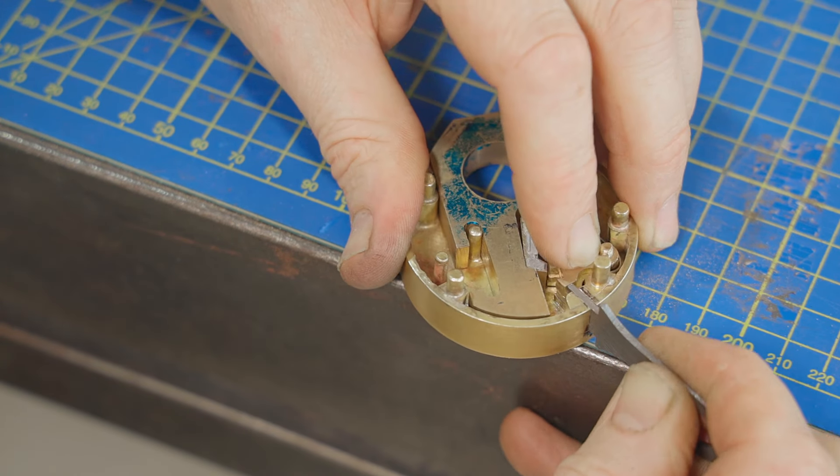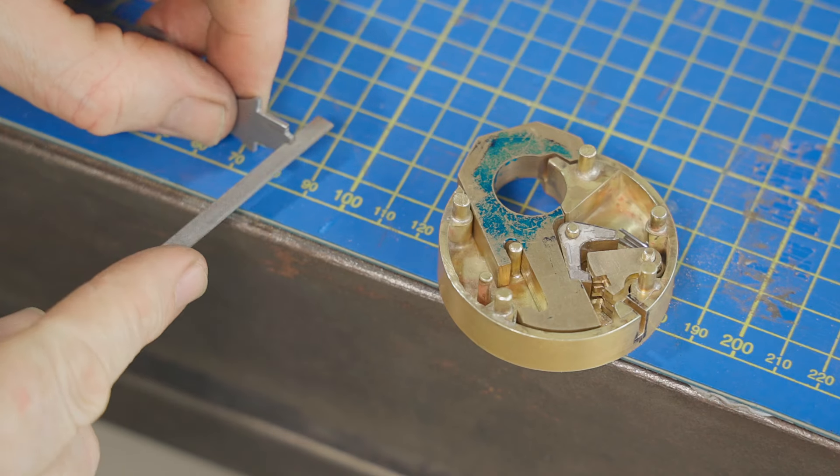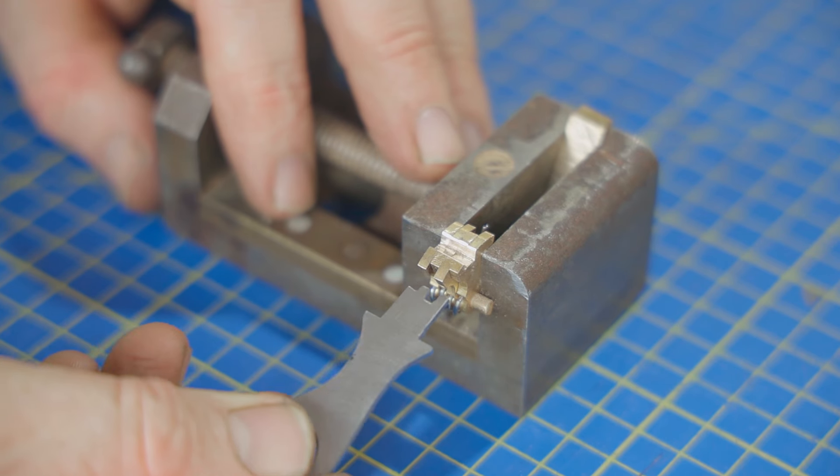I decided the better way to work out where I needed to file was to stack the levers back in the vise with the gates lined up and use that to reference off.